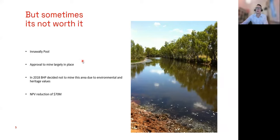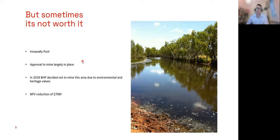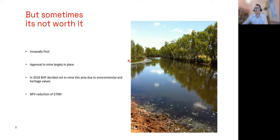It's worth calling out that sometimes it's not worth doing a diversion. At our Jimblebar mine at Inawally Pool, we had approvals to mine the area directly underneath the pool, but in 2018 we decided not to mine there due to its environmental and heritage values. That resulted in an NPV reduction of US$70 million and required us to re-release our reserve numbers to the Australian and New York stock exchanges. We could have diverted the creek, but the geology and topography are quite unique and we wouldn't have been able to re-establish a pool like that.